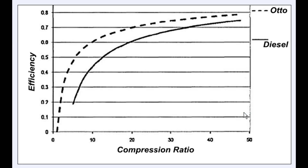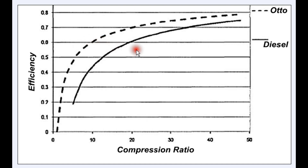This graph of ideal cycle efficiency is from a paper by John E. Shaw from the Missouri Academy of Science. Compression ratio is on the horizontal axis and ideal cycle efficiency on the vertical axis — a dotted line for the Otto cycle and a solid line for the diesel. Many people may be amazed to see that the Otto cycle is actually quite a bit more efficient theoretically than the diesel cycle. At a 10:1 compression ratio on the Otto cycle, a diesel would need roughly 20:1 to match the same 60% ideal cycle efficiency.